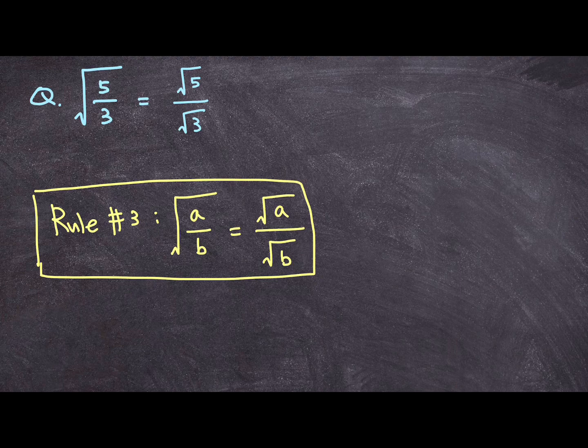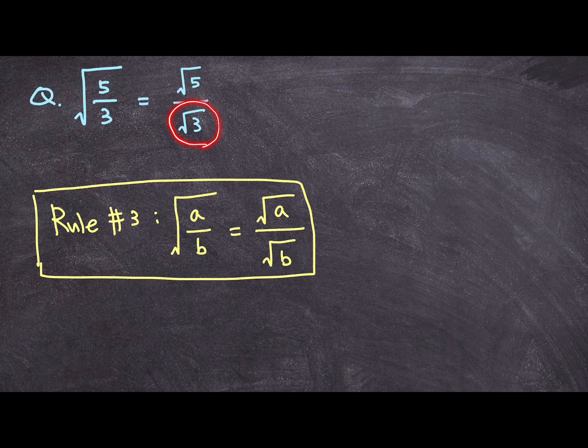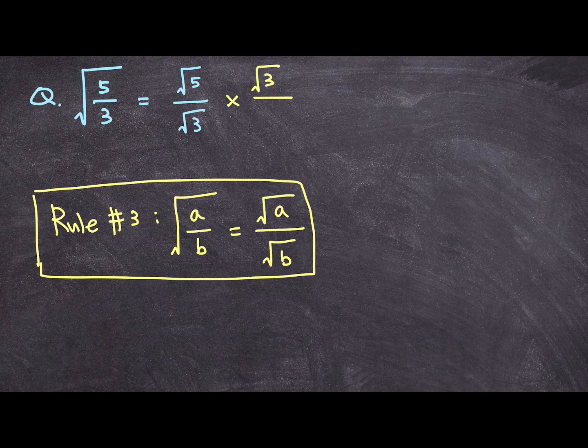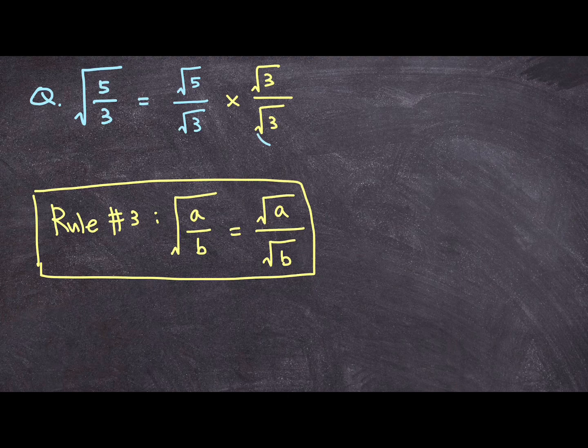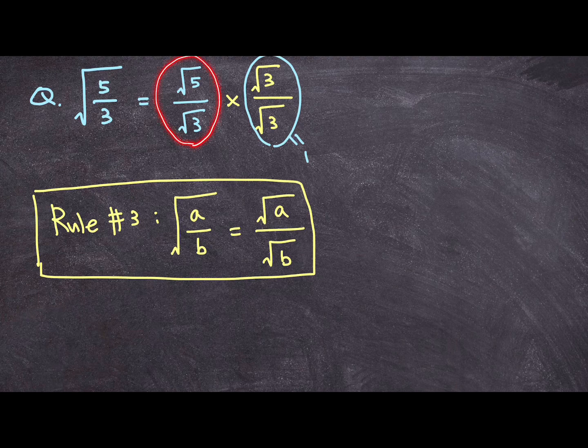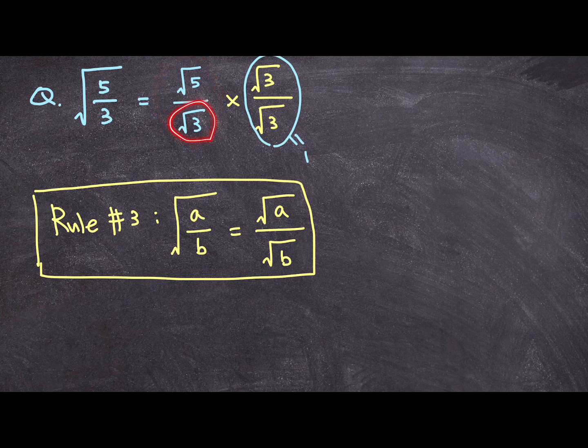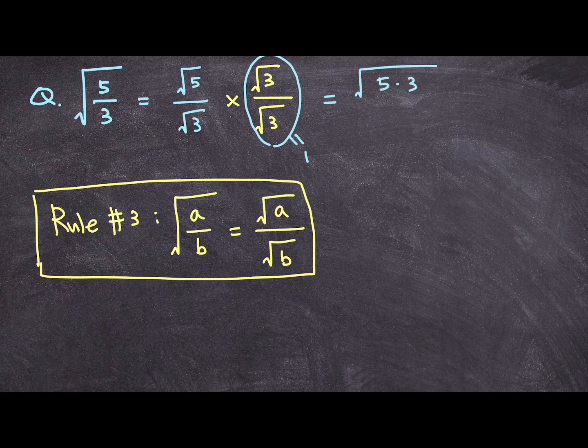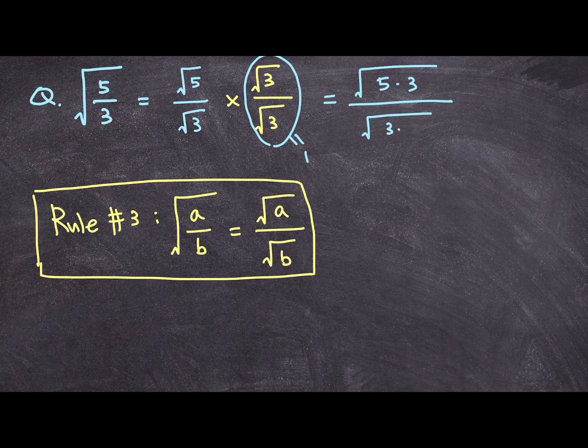Now, as I have already told you, you are not supposed to have a radical expression in the denominator. So what I'm going to do is I'm going to take that denominator and multiply by that over that radical. Again, this number is equal to 1, so multiplying 1 to the original value will not change the value of the original number, but it'll help us get rid of that radical in the denominator. So what we end up with is square root of 5 times 3 over square root of 3 times 3.